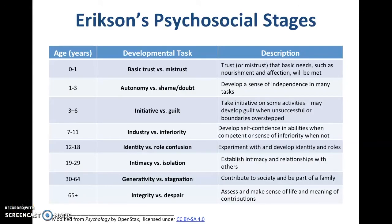The first theorist we'll talk about is Erik Erikson and his psychosocial theory of development. Erikson is a stage theorist, so he feels that there are distinct developmental tasks in each of the relevant age periods, starting in the first year with trust versus mistrust — whether or not a child develops a general sense of trust by having his or her basic needs met. In the toddler years, ages one to three, working on autonomy versus shame and doubt.